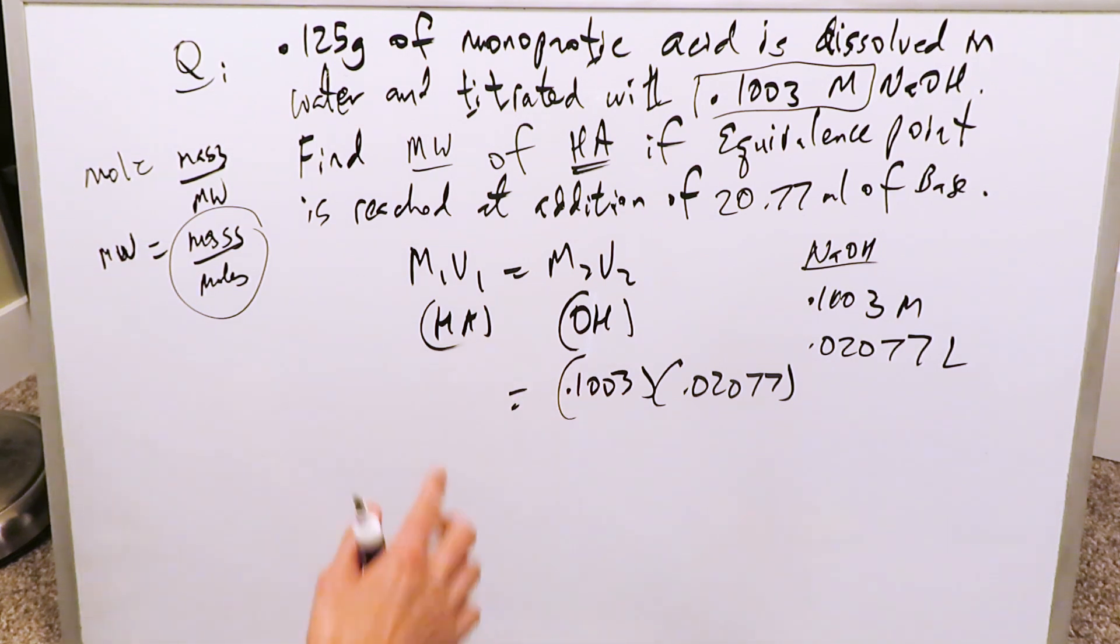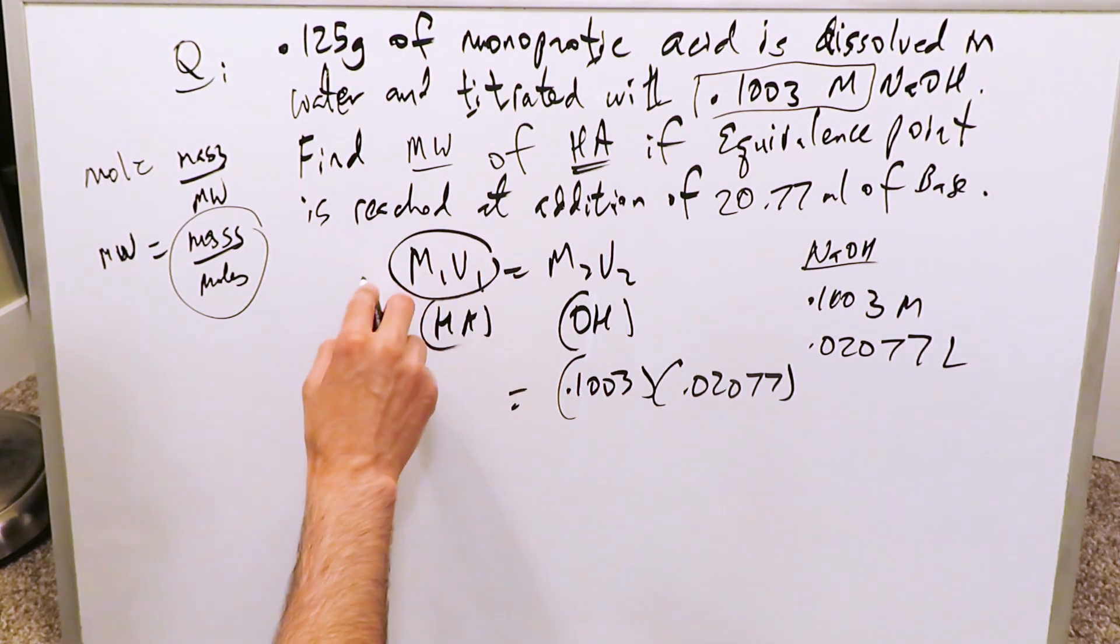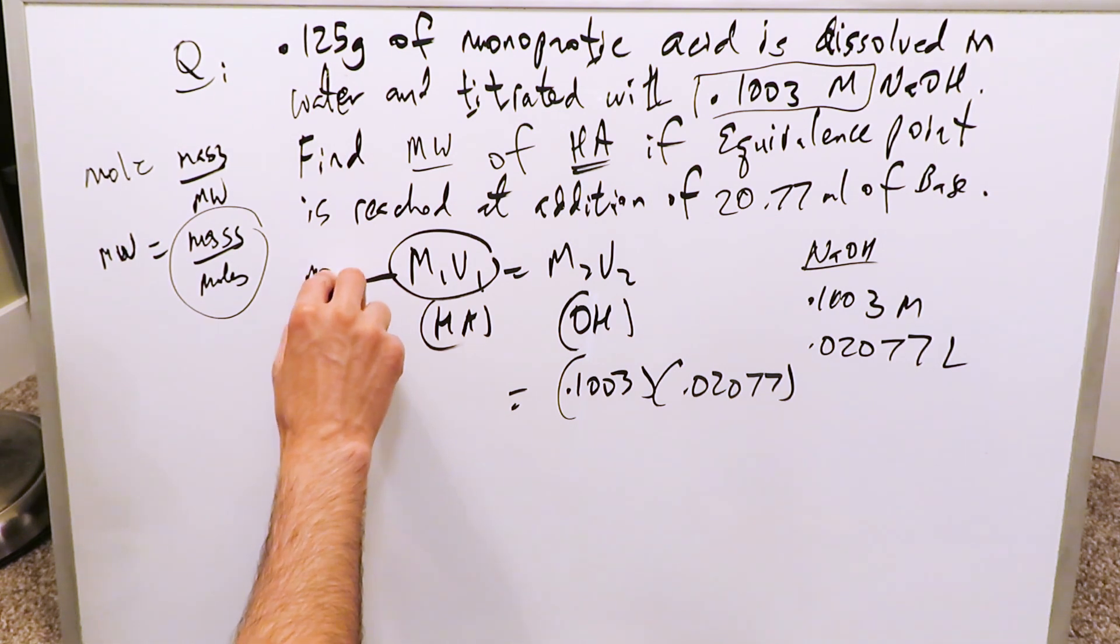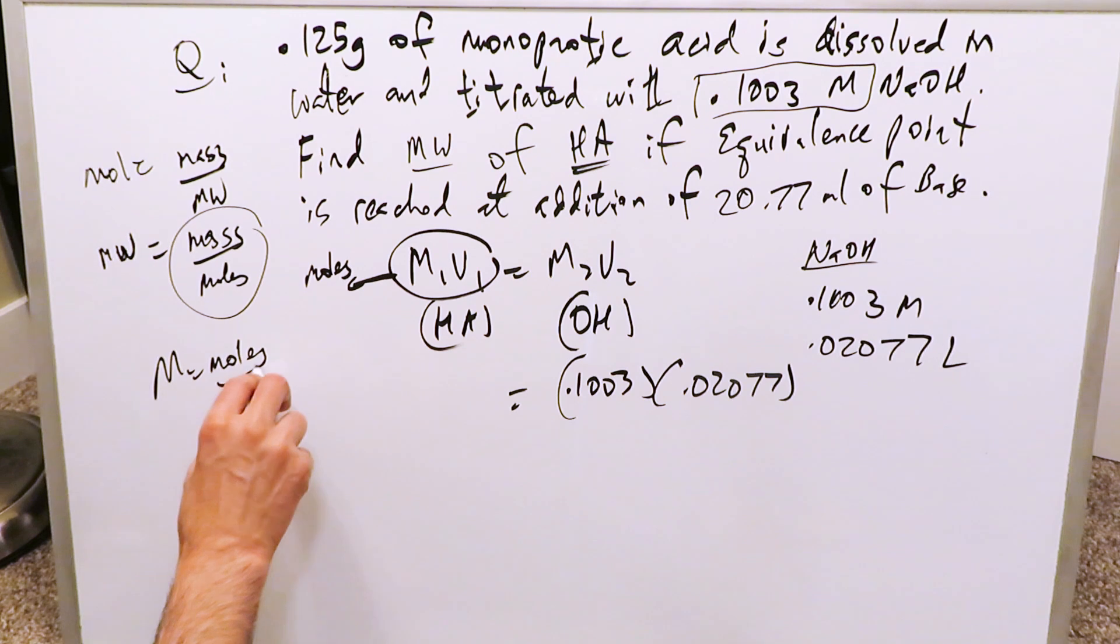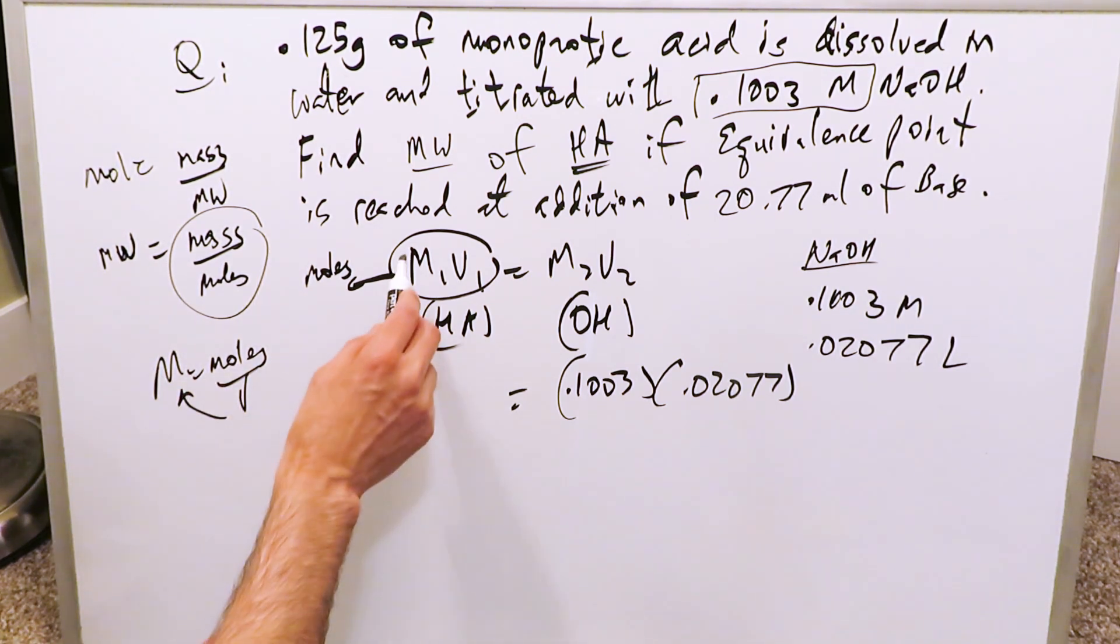I don't know any of these items here, but what I do know is that this right here is equal to moles. Why is this equal to moles? Because molarity is equal to moles over volume. If I push the volume here, I know MV is equal to moles. So this right here is the equation.